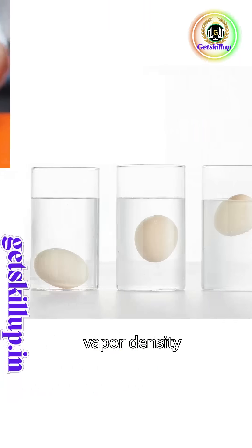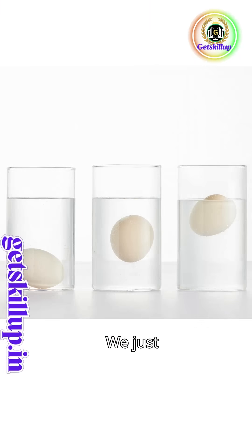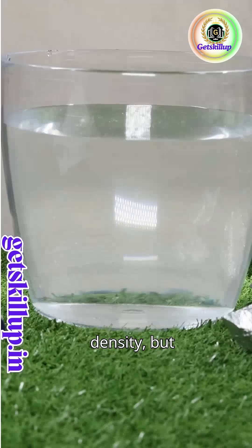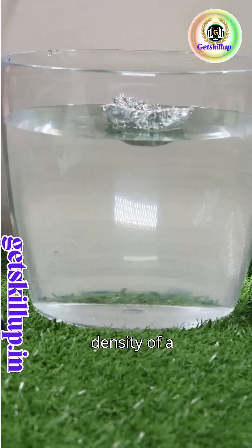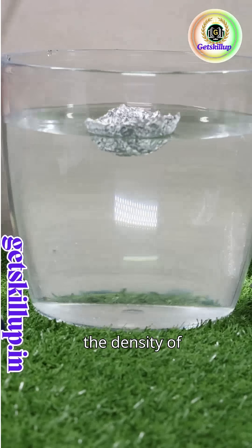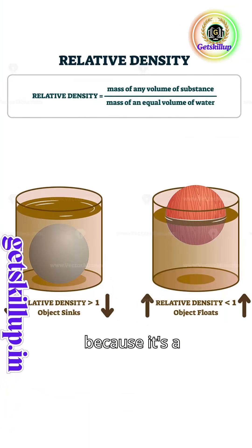Relative density and vapor density explained in few seconds. We just learned about density, but what about relative density? Relative density is the ratio of the density of a substance to the density of water. It has no unit because it's a ratio. Formula: relative density equals density of substance by density of water.